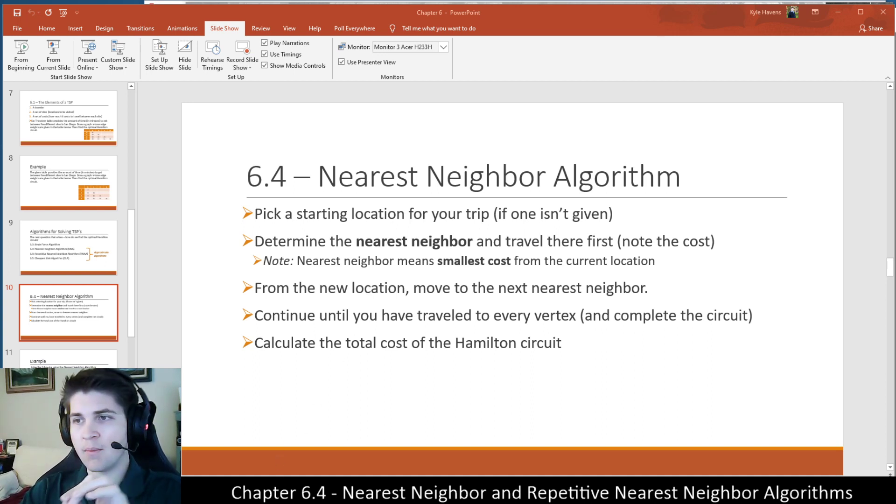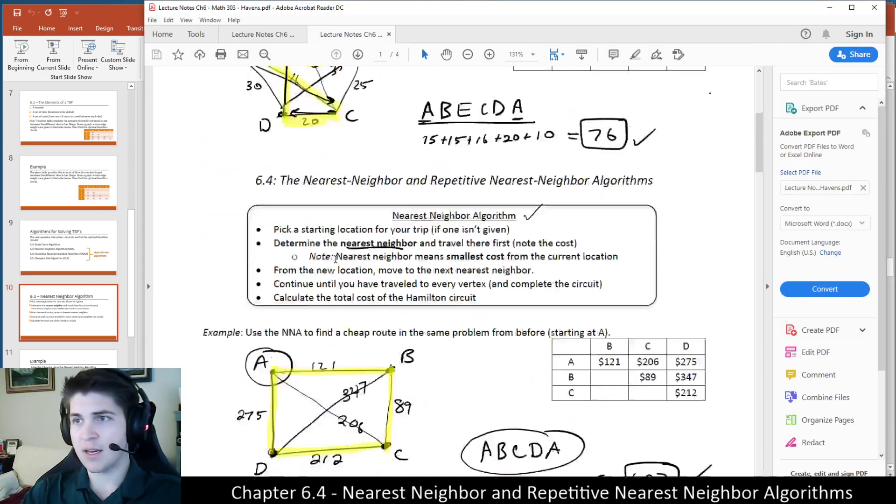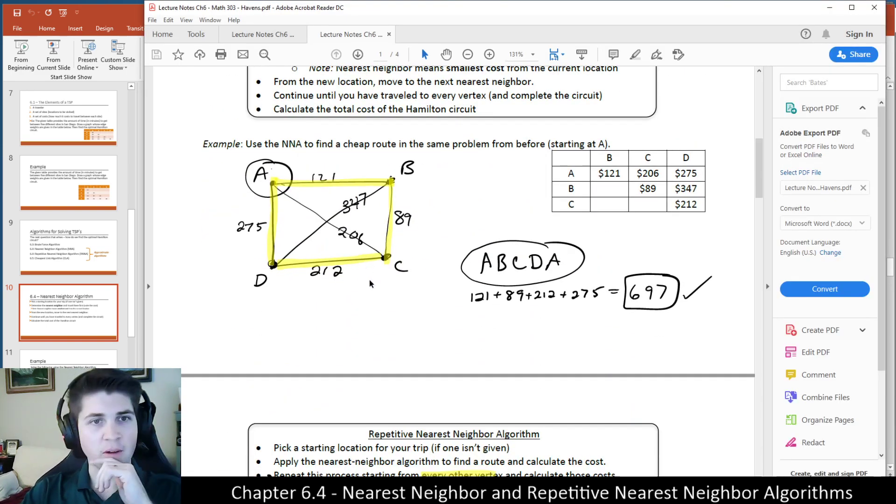So we looked at a few examples last week of using the nearest neighbor algorithm to do this. And we started at A, and the nearest neighbor from A was the cheapest location connected to A, the cheapest adjacent vertex. So essentially we had three options. We could have traveled first to D, first to C, or first to B. And we chose to go to B first because it was the nearest neighbor or the cheapest available option from where I'm at.